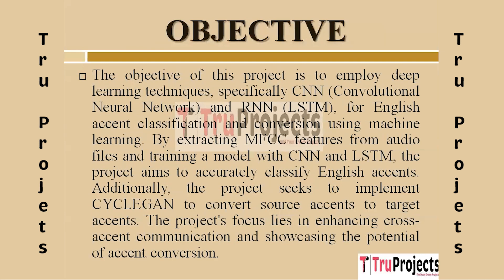The objective of the project is to categorize and convert English accents using machine learning, employing deep learning techniques specifically CNN and RNN. The project aims to accurately classify English accents by extracting MFCC features from audio files and training a model with CNN and LSTM. It also aims to implement CycleGAN to change accents from source to target, improving interaction and communication.